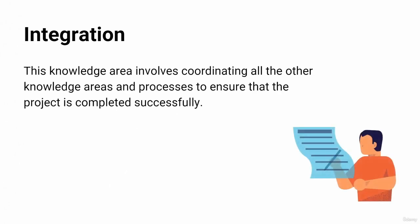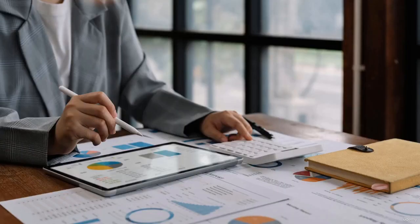The first knowledge area is Integration. This knowledge area involves coordinating all the other knowledge areas and processes to ensure that the project is completed successfully. An example is when a project manager is working on a construction project, using the integration knowledge area to ensure all other knowledge areas are working together to complete the project on time and within budget.